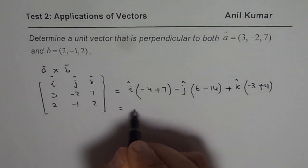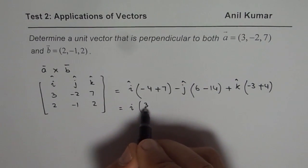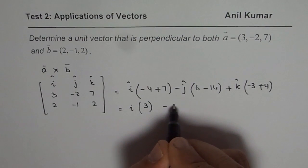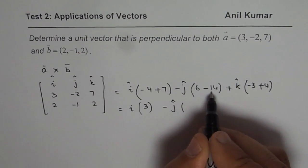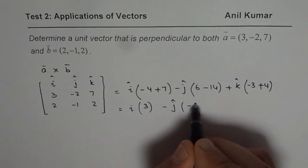So now you could write this as i, and the number here is 3, 3i minus j, which is minus of 8, so we get -8 here.